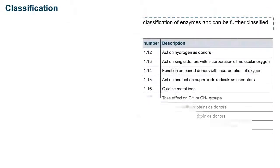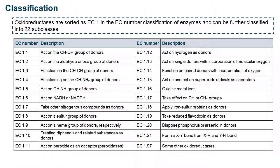Oxidoreductases are sorted as EC1 in the EC number classification of enzymes and can be further classified into 22 subclasses.